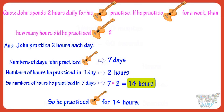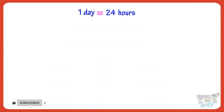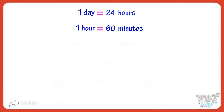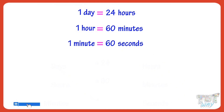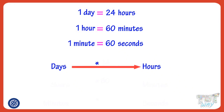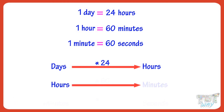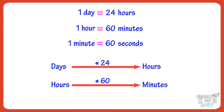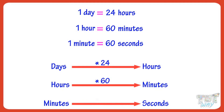So kids, today we learned that 1 day equals 24 hours, 1 hour equals 60 minutes, and 1 minute equals 60 seconds. To convert days to hours, we multiply days with 24. To convert hours to minutes, we multiply hours with 60. To convert minutes to seconds, we multiply minutes with 60.